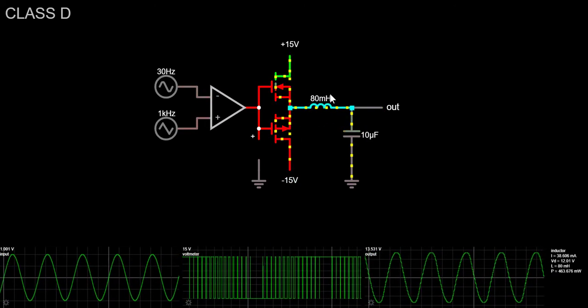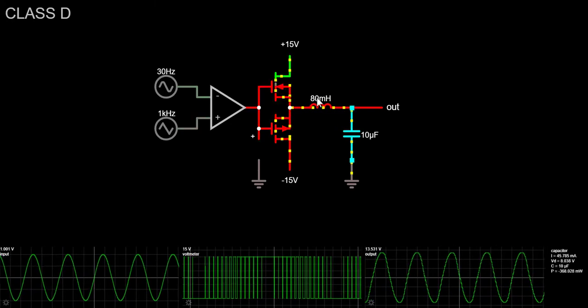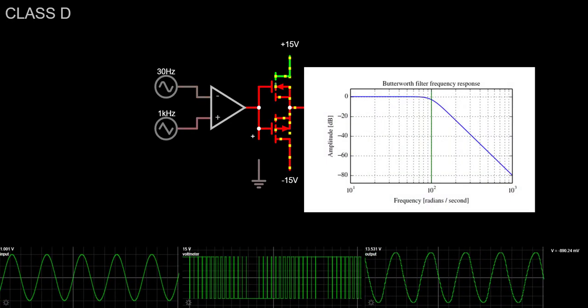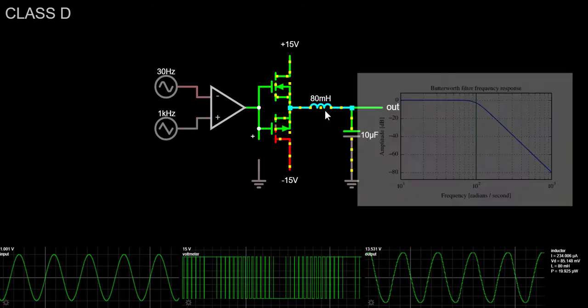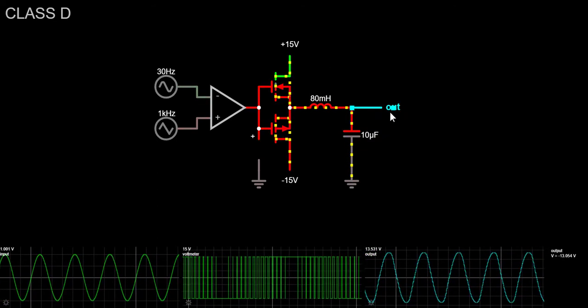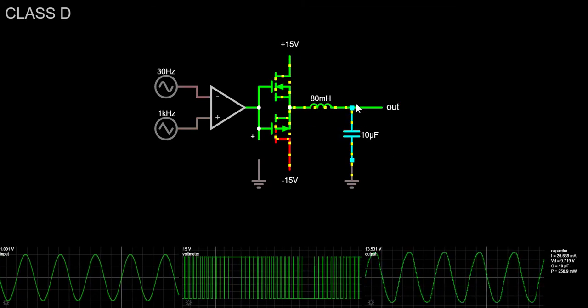For the filtering stage, one of the best ways to do this is to use a Butterworth filter. This type of filter has a very flat response in the passband, and this means that the signal that we want to achieve will not be attenuated too much.